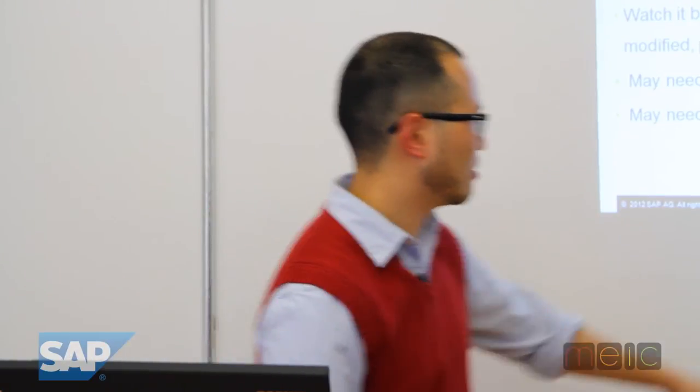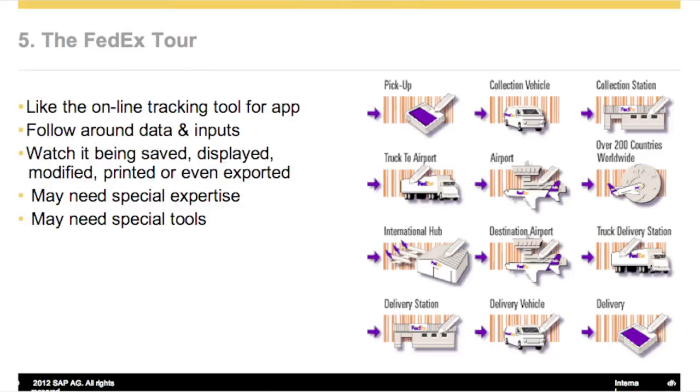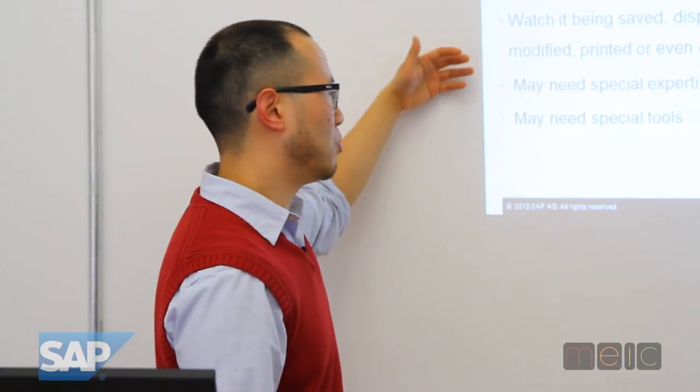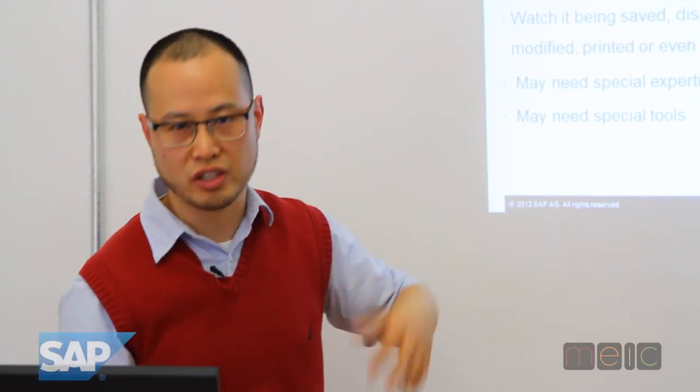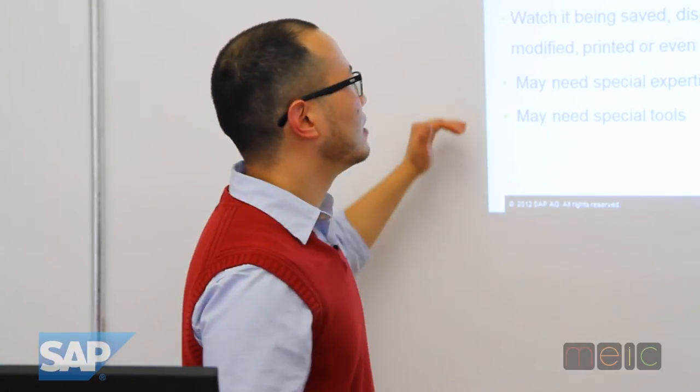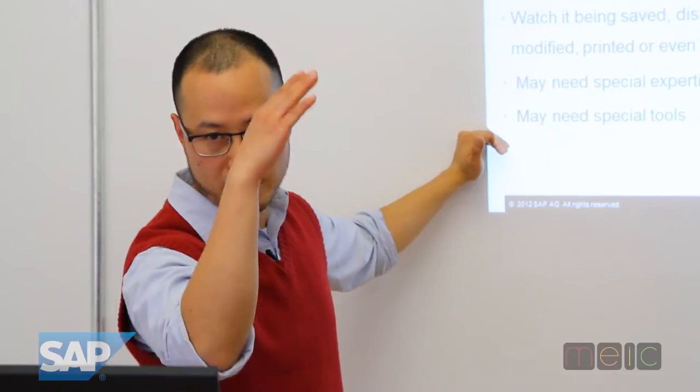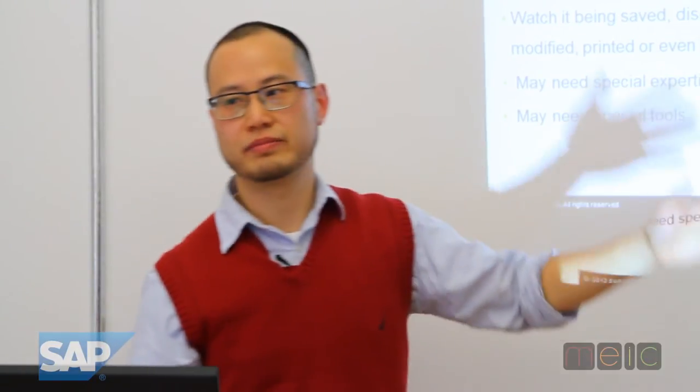The FedEx tour is about online tracking for your app. The idea is you're following data inputs — like being a super-snoopy thing going around the trail. In the landmark tour you were a UI person navigating landmarks; this is like following the data in the back end. You watch it being saved, displayed, printed, exported — does it get modified, does it change the database, does it change on screen? You're following the path like a package at FedEx. This is one of the ones with a high barrier to entry; you may need special expertise.